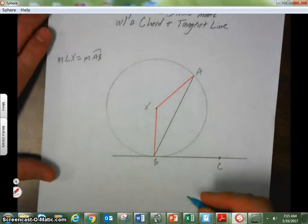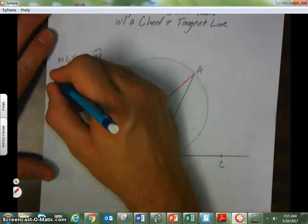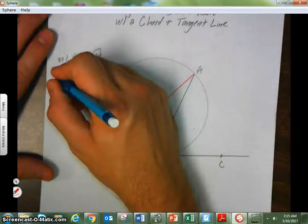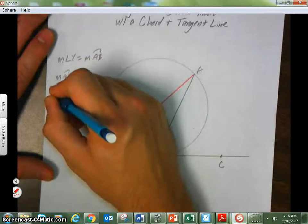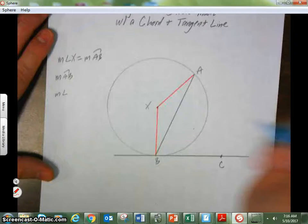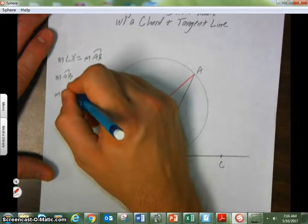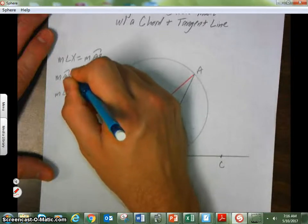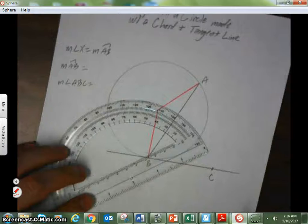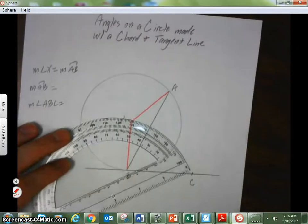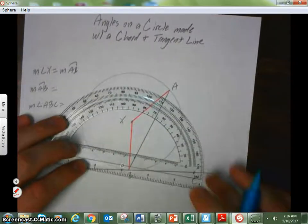So, now what I want to know is, what is the measurement of arc AB, and what is the measurement of angle ABC? We want to measure those things, and if we do everything correctly, we should see a relationship between the two measurements.